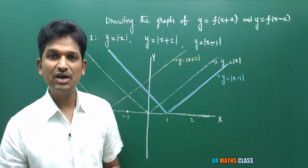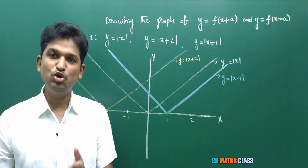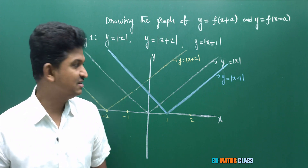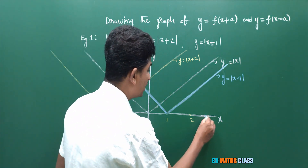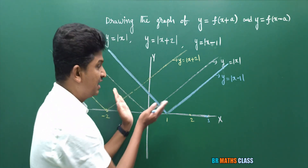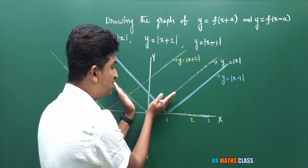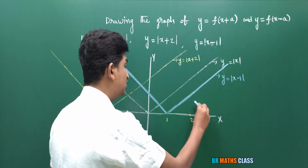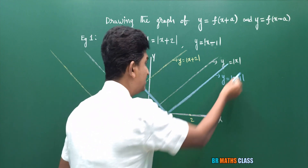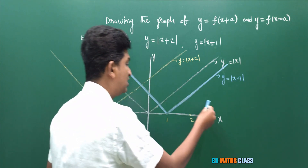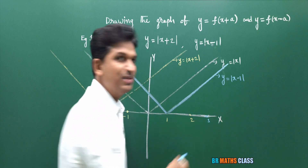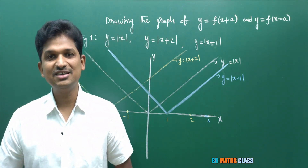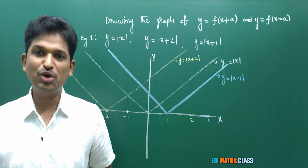Now you can easily draw the graph of modulus of x-2 and modulus of x-3. Suppose you want to draw the graph of modulus of x-3: take the modulus function and shift it through three units towards the right. Then you will get the graph of modulus of x-3. Do a little bit of practice and you can understand this very easily.